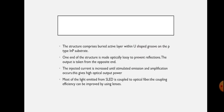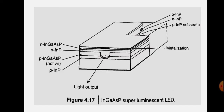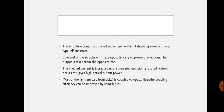The structure comprises a buried active layer within the U-shaped groove on the P-type indium phosphate substrate. The groove is made in the P-type indium phosphate substrate, and that acts as the active region. One end of the structure is made optically lossy to prevent reflections.